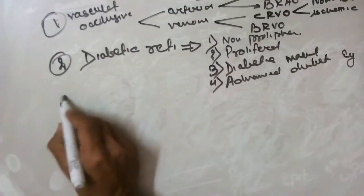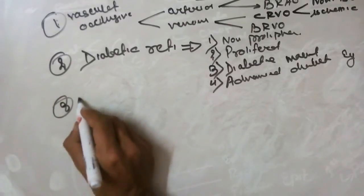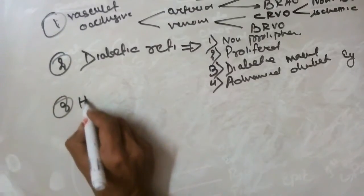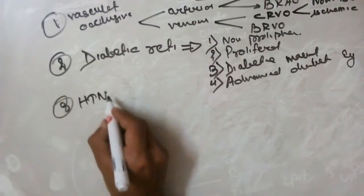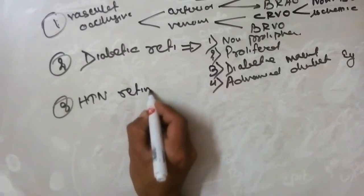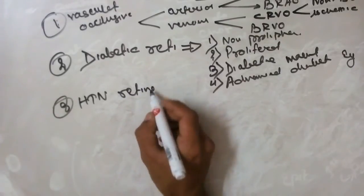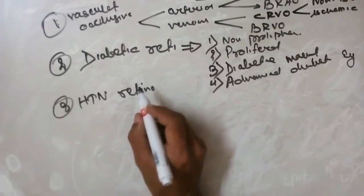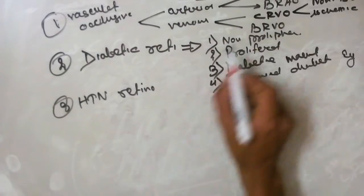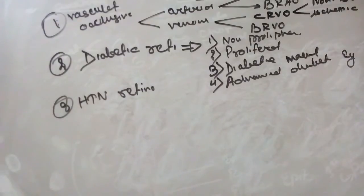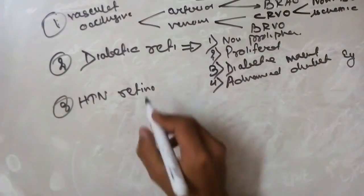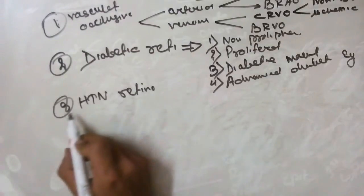The third systemic disease is hypertensive retinopathy. It is a good thing that there is no formal classification for hypertension, but usually there is grading — we will study about hypertensive retinopathy grading.